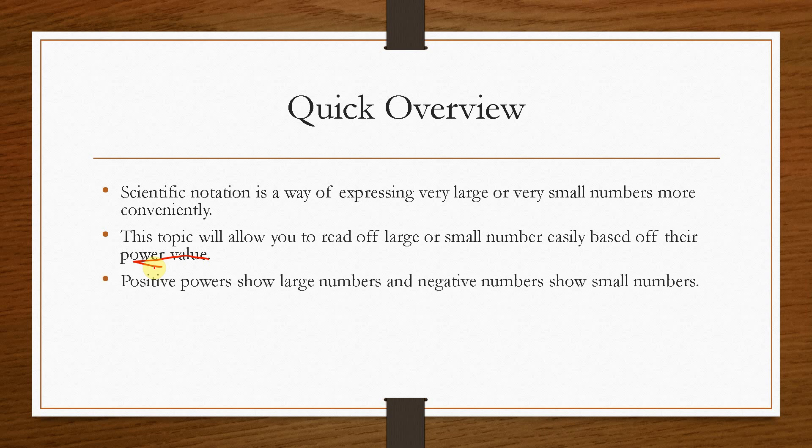Now positive powers show a large number, whereas negative powers show a very small number. So for example, if we take these two examples here, we have 1 times 10 to the power positive 4, and we have 1 times 10 to the power minus 4. One of these is incredibly large, and the other one is incredibly small. So we'll see the process on how to write these in standard form, and then indeed convert standard form to Scientific Notation.